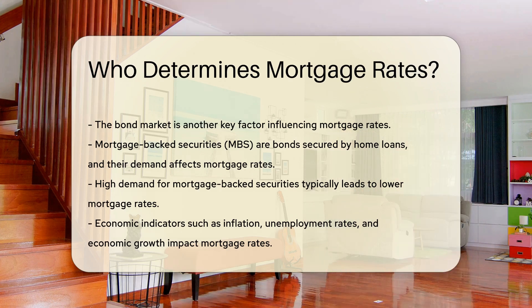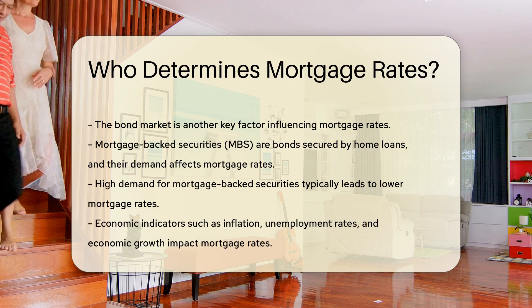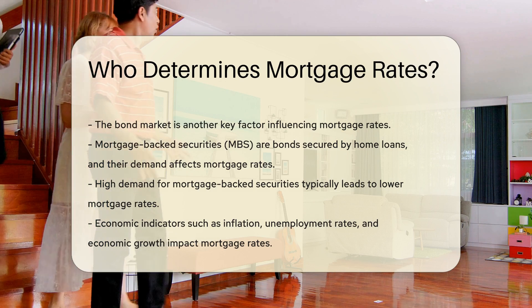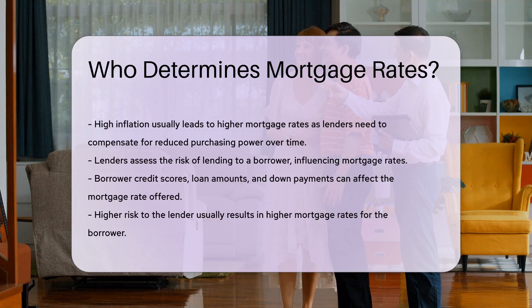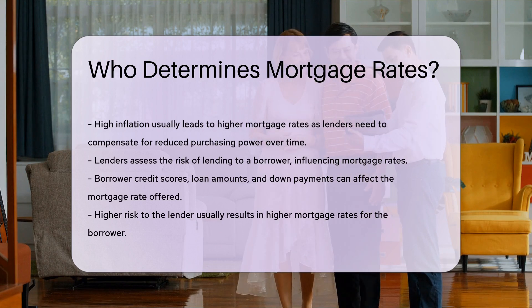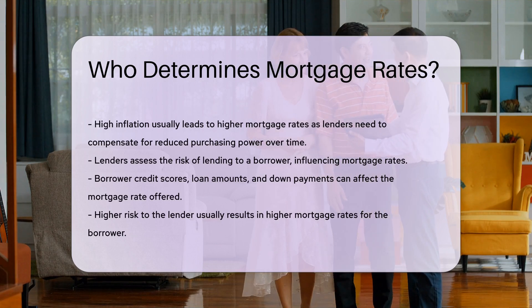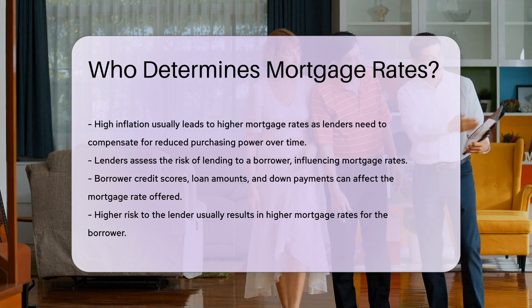Lenders themselves have a role in determining mortgage rates. They assess the risk of lending to a borrower. Borrower credit scores, loan amounts, and down payments can influence the rate offered. Higher risk to the lender usually results in higher mortgage rates for the borrower.